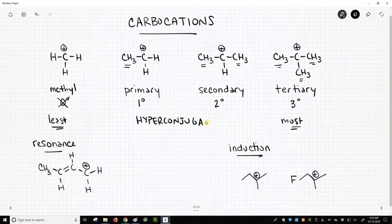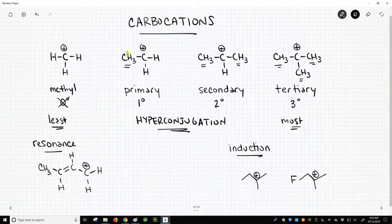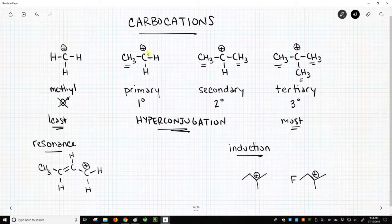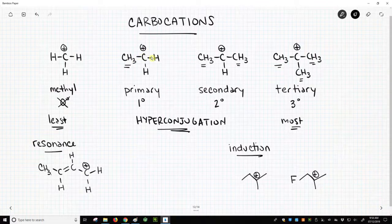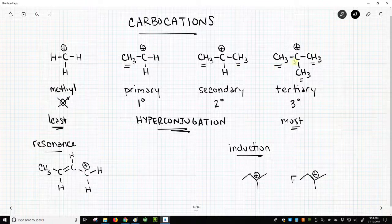If you remember, the attached carbons and the bonds on these attached carbons, those electrons in those bonds can weakly overlap with our electron-deficient carbon and help stabilize that carbocation. The more carbons we put around our carbocation, the more stable the carbocation becomes. This is a hyperconjugation effect.